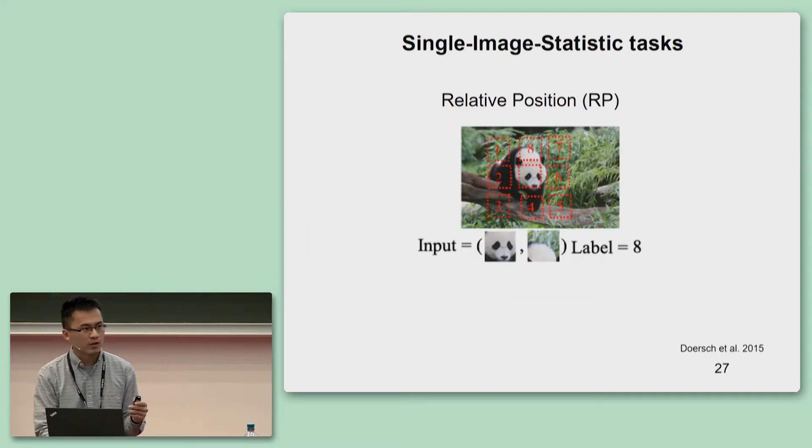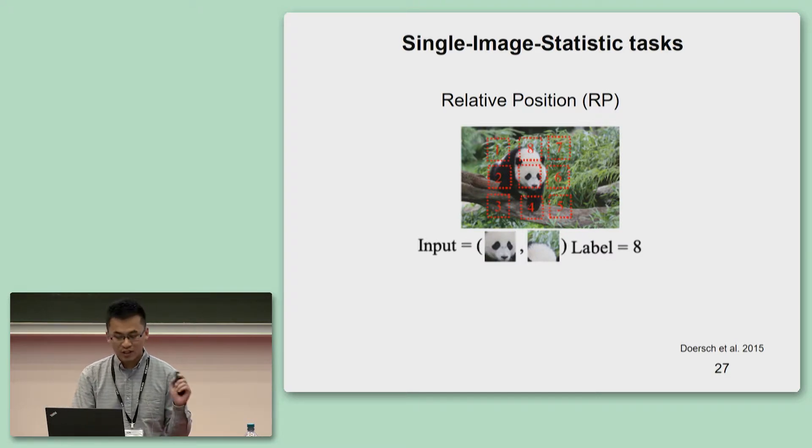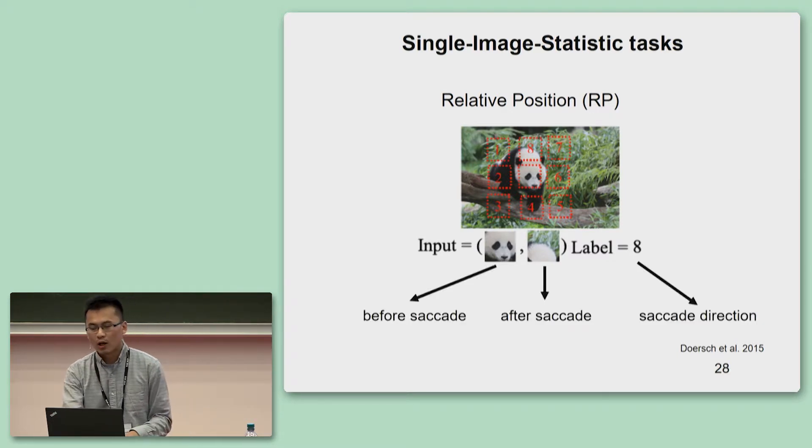So, let's begin from a class of self-supervised tasks, which I call single image statistic tasks. This task first extracts some information from the original inputs and then asks the networks to infer the extracted information from the remained partial data. So the networks are effectively trained to discover the relations of different statistics within the same image. One example in this task is this task called relative position. This task first samples two patches from adjacent locations of a grid of an image and then asks the network to predict their relative position. For biological implementations, you can imagine that the two patches are the images before and after saccade. But the label predicted is then similar to the direction of the saccade, which is available to humans.